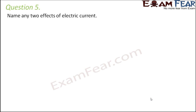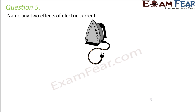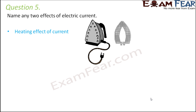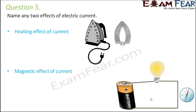Question number five: Name any two effects of electric current. The first is the heating effect of current — when current passes through a wire, it produces heat. This is widely used in devices like irons, geysers, immersion rods, and room heaters. The second is the magnetic effect of current — a current-carrying conductor can behave like a magnet. This is used in electromagnets, which have wide applications in electric bells, motors, and loudspeakers.